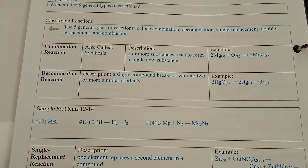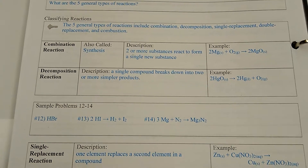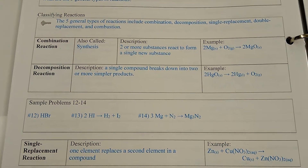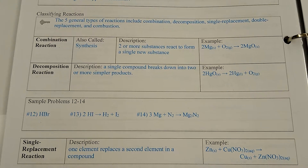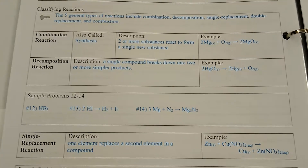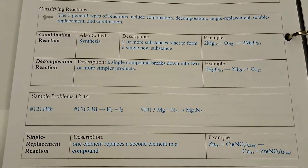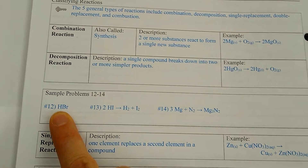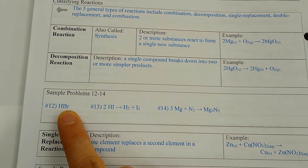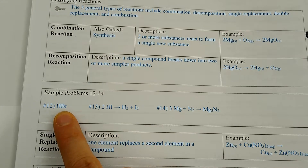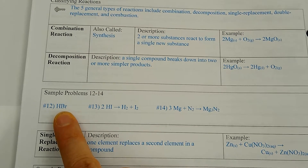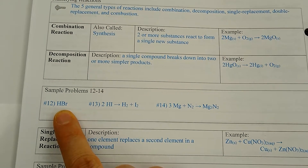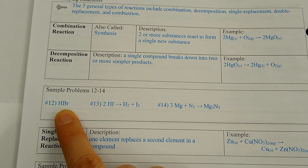Sample problem 12 asked: what is the formula for the binary compound that decomposes to create hydrogen and bromine? If it's creating hydrogen and bromine, it must be made out of those two elements. Hydrogen is +1, bromine is -1. They combine to form hydrogen bromide, or hydrobromic acid — HBr. That's the compound that would decompose to make hydrogen and bromine.